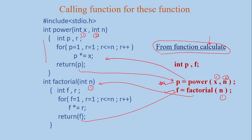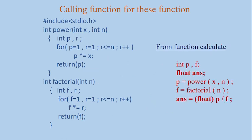Then we want to calculate: p is nothing but x raised to n, and f is nothing but n factorial. Now we want to calculate x raised to n divided by n factorial. So we declare a float variable for the answer. Both p and f are integers, so integer divided by integer — the C compiler will always give you the answer in integer format. To get a proper answer, p is first converted into float — this is called type casting — and then it is divided by f.